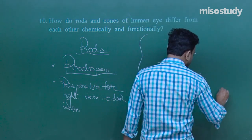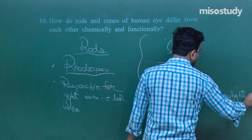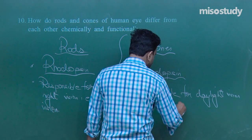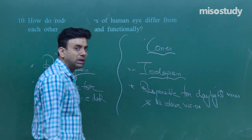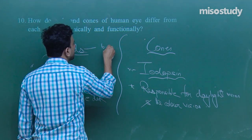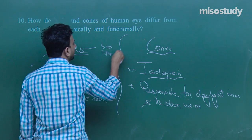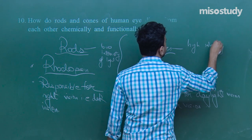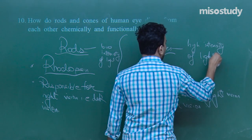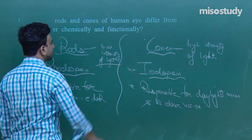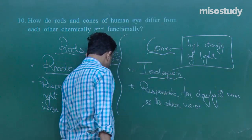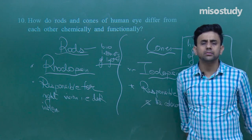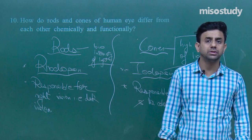Additionally, rods are active under low intensity of light, while cones are active under high intensity of light, making cones responsible for daylight vision and color vision. These are some of the structural and functional differences between rods and cones. Friends, we have come to the end of this question exercise — revise this, and for any doubts you can always get back to me. Thank you.